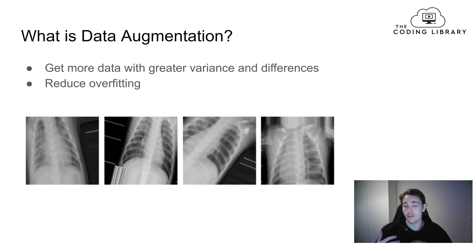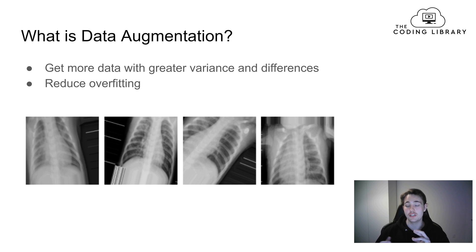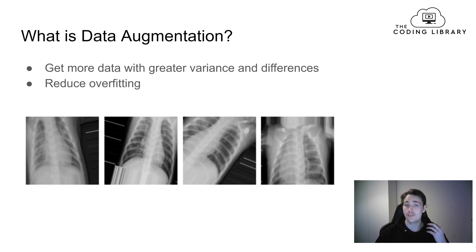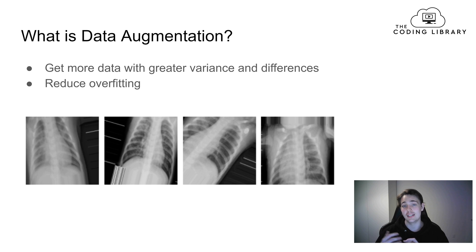We can rotate, shift, and do a lot of different things that I'll show you how to apply in Keras. This is a really cool feature when training neural networks because we can have a really small dataset and then use data augmentation to get more images by using methods that shift, rotate, shear, and transform our images. We can use data augmentation to reduce overfitting because we get greater variance and more differences in our images, which is really good for reducing overfitting.